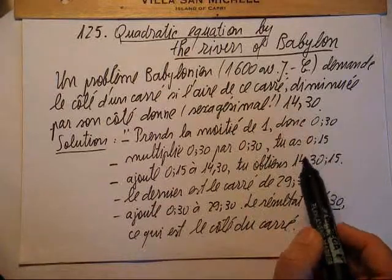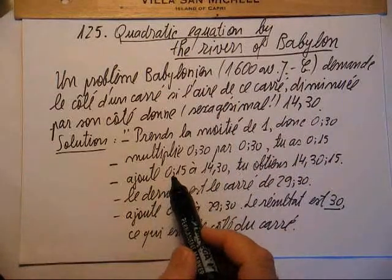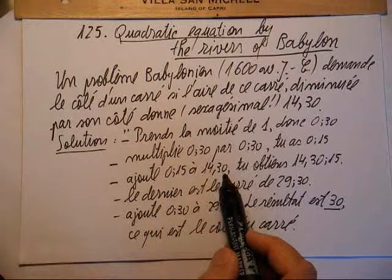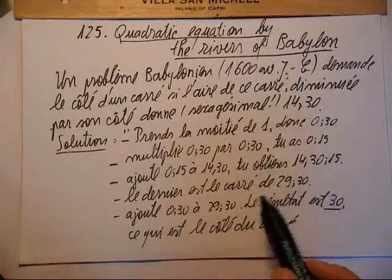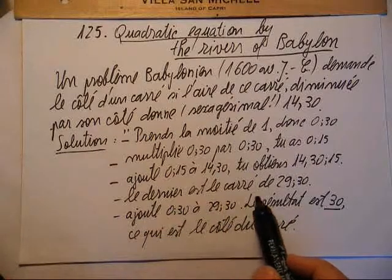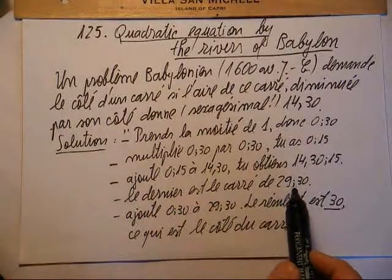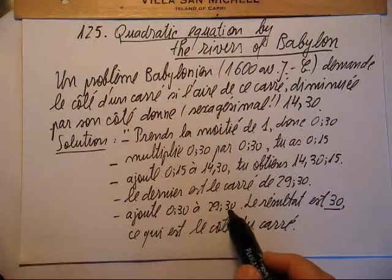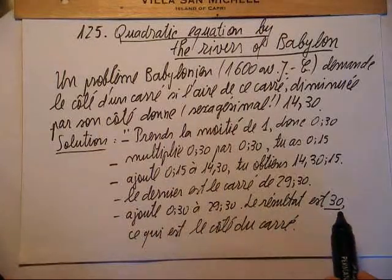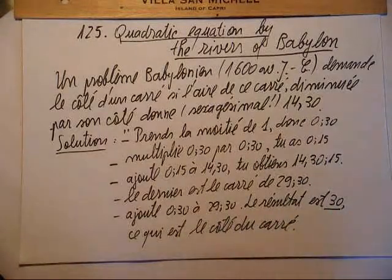Multiplie 0,30 par 0,30, tu as 0,15. Ajoute 0,15 à 14,30, tu obtiens 14,30. Le dernier est le carré de 29,30. Ajoute 0,30 à 29,30. Le résultat est 30, ce qui est le côté du carré.